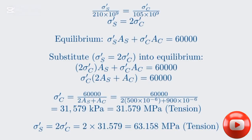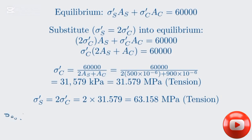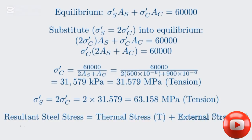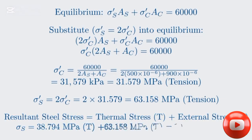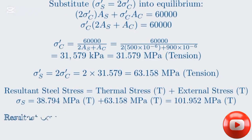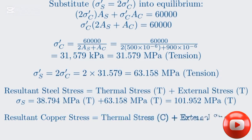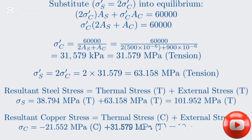So now we have all the pieces: the thermal stresses from Part 2.1 and the stresses from the external load. For steel, the thermal stress was 38.794 megapascals in tension, and the stress from the external load is 63.158 megapascals also in tension. Since both are tension, we add them together to get the total resultant stress. For copper, the thermal stress was 21.552 megapascals in compression, represented with a negative sign. The stress from the external load is 31.579 megapascals in tension. The total is negative 21.552 plus 31.579, which gives a positive 10.027 megapascals — the positive sign indicates the final resultant stress in copper is in tension.